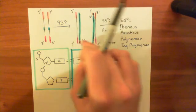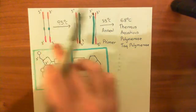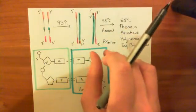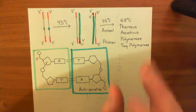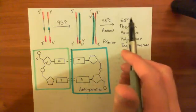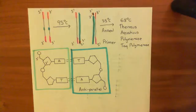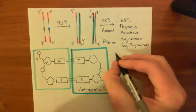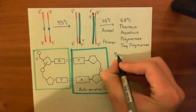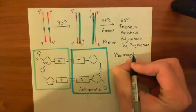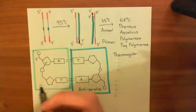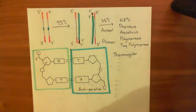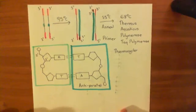Now you've doubled the amount, but that's still not many. So what you will then do is go back through this process — heat it up to 95 degrees Celsius again. Both of these double-stranded DNAs will go through exactly the same process. They'll cleave apart, the hydrogen bonds will break, then you'll cool down to 55 degrees Celsius, primers will anneal to all four single strands, heat up to 68 degrees Celsius, and Thermoaquaticus polymerase will synthesize complementary strands. The machine which continues looping the temperature like that is known as a thermocycler, and on every cycle you will double the amount of DNA fragments.